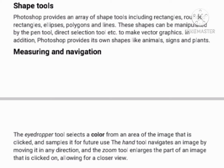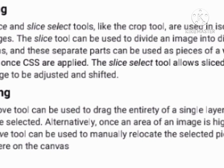Selection tools are used to select all or any part of a picture to perform cut, copy, or detaching operations. Cropping: The crop tool can be used to select a particular area of an image and discard the portion outside the chosen section. This tool helps create a focus point on an image and increase image quality by removing excess space.